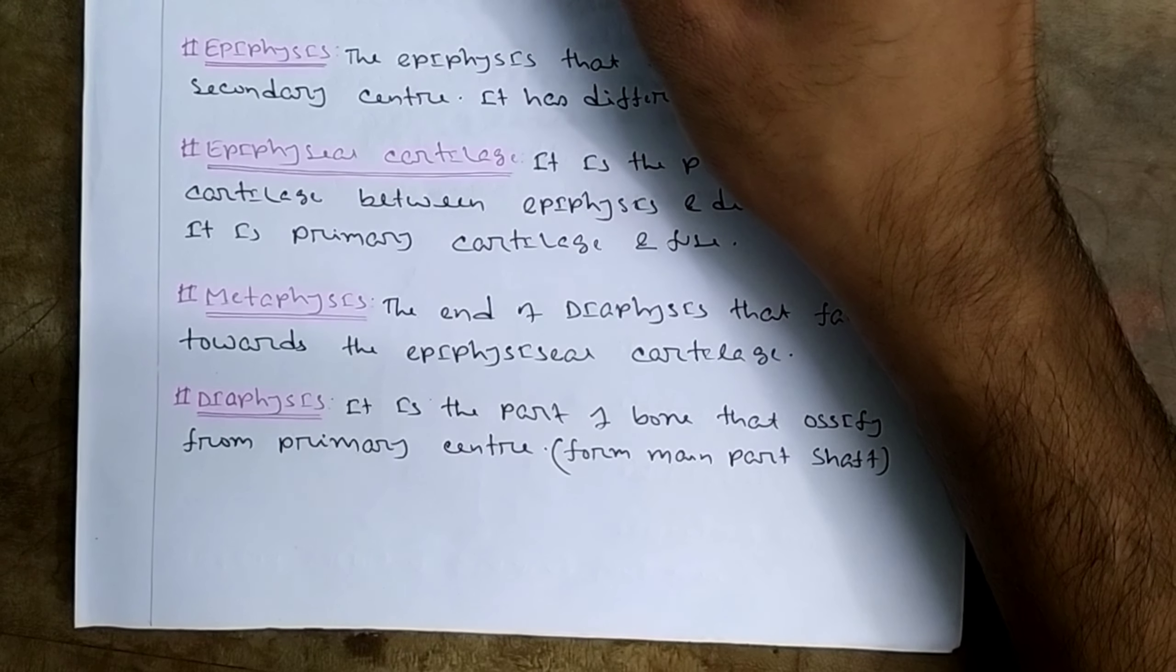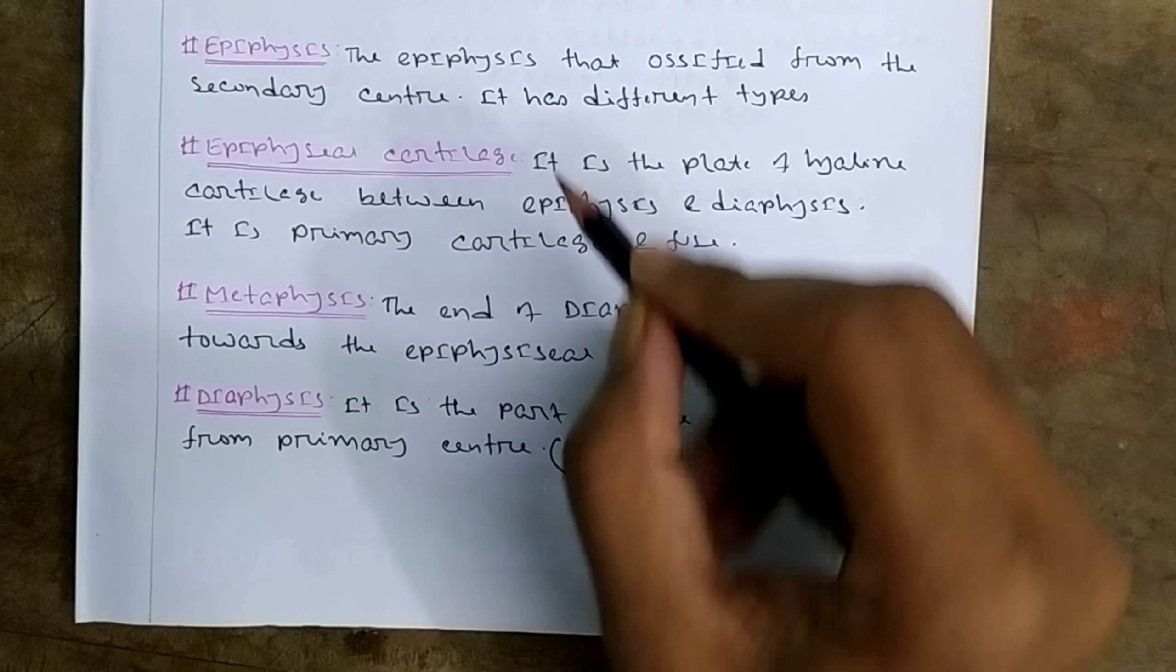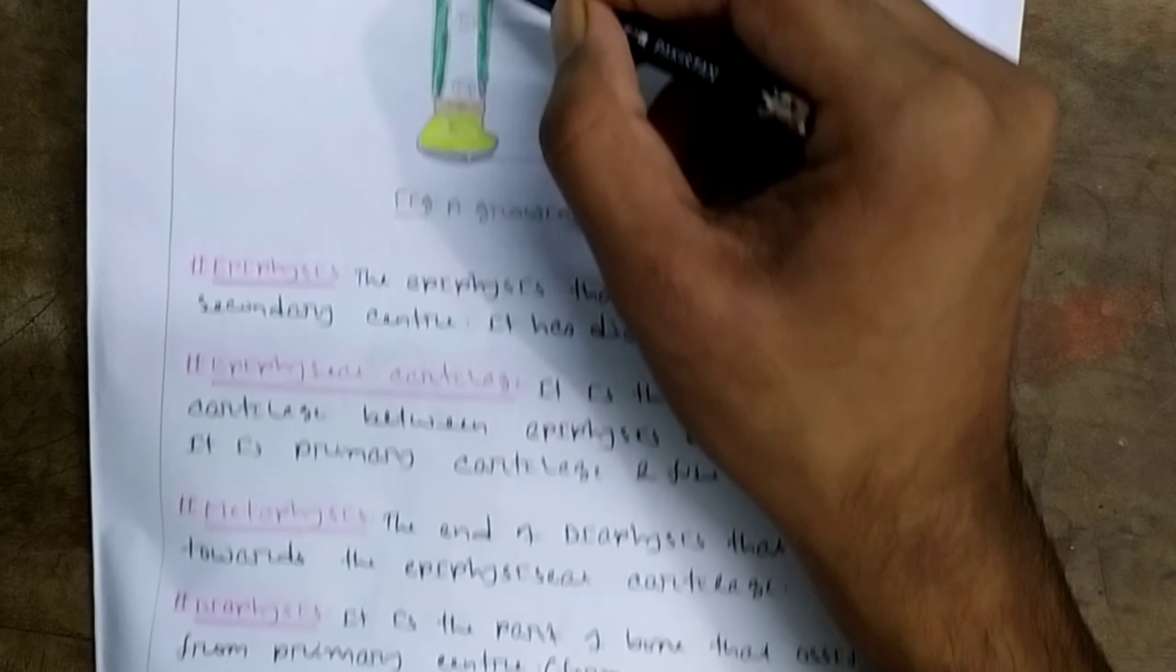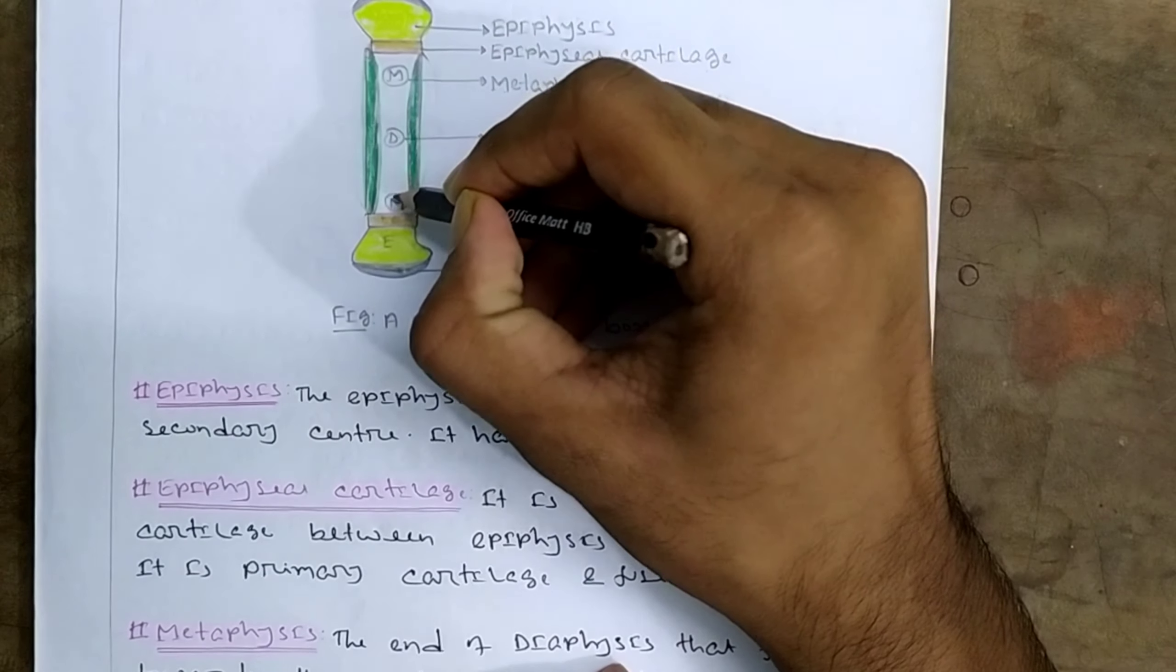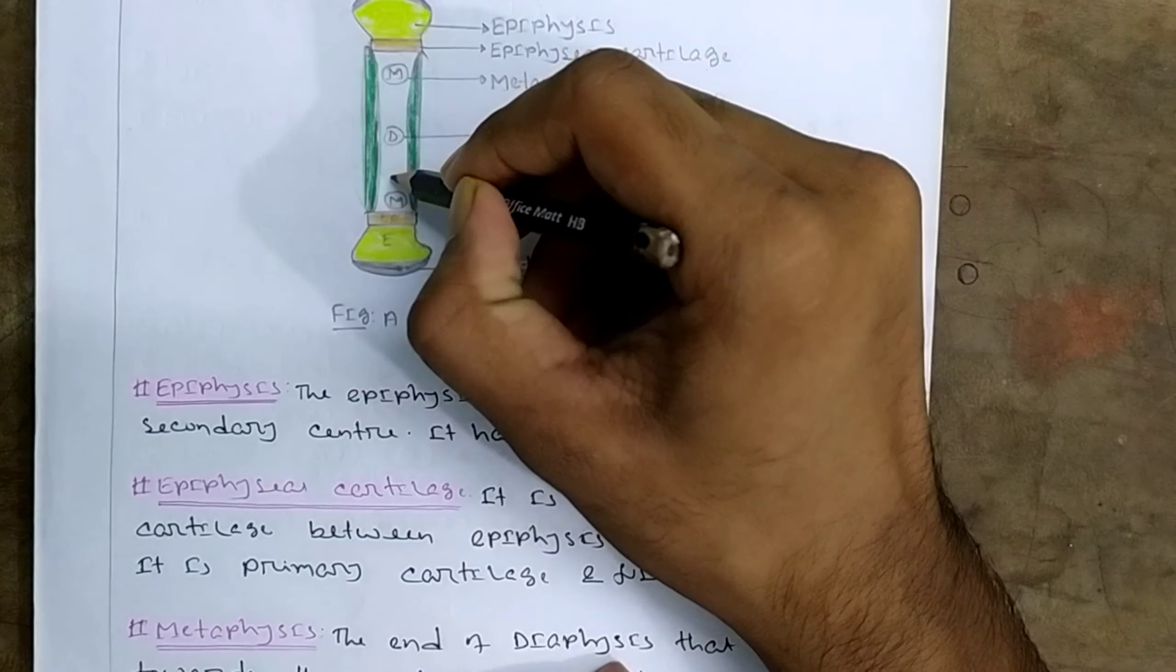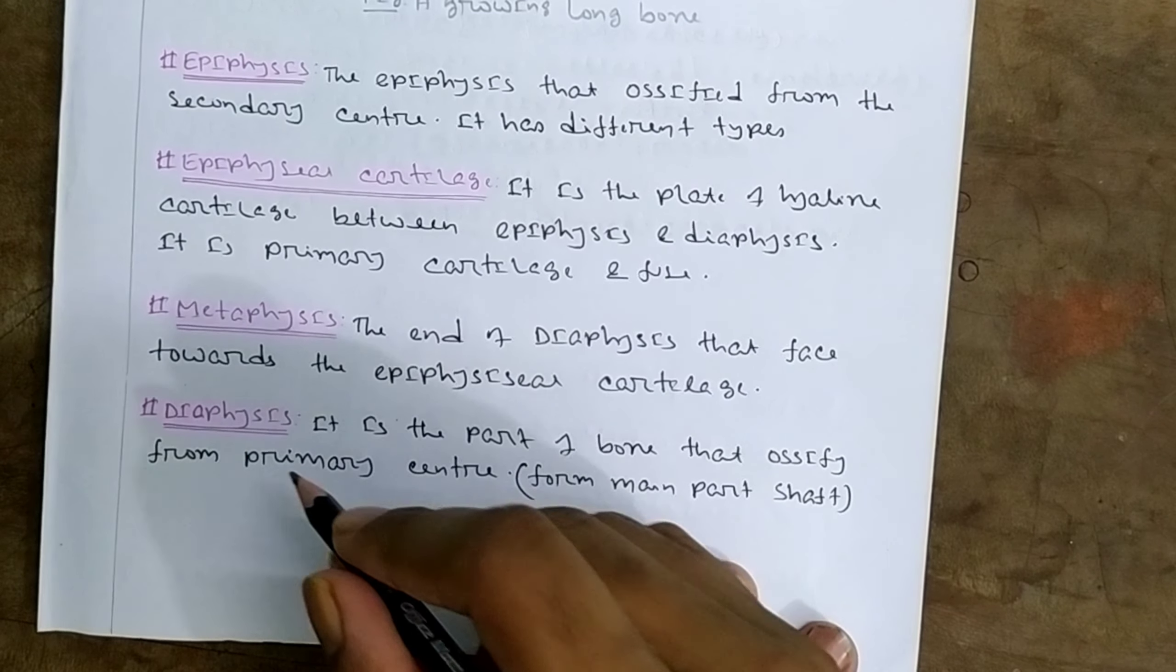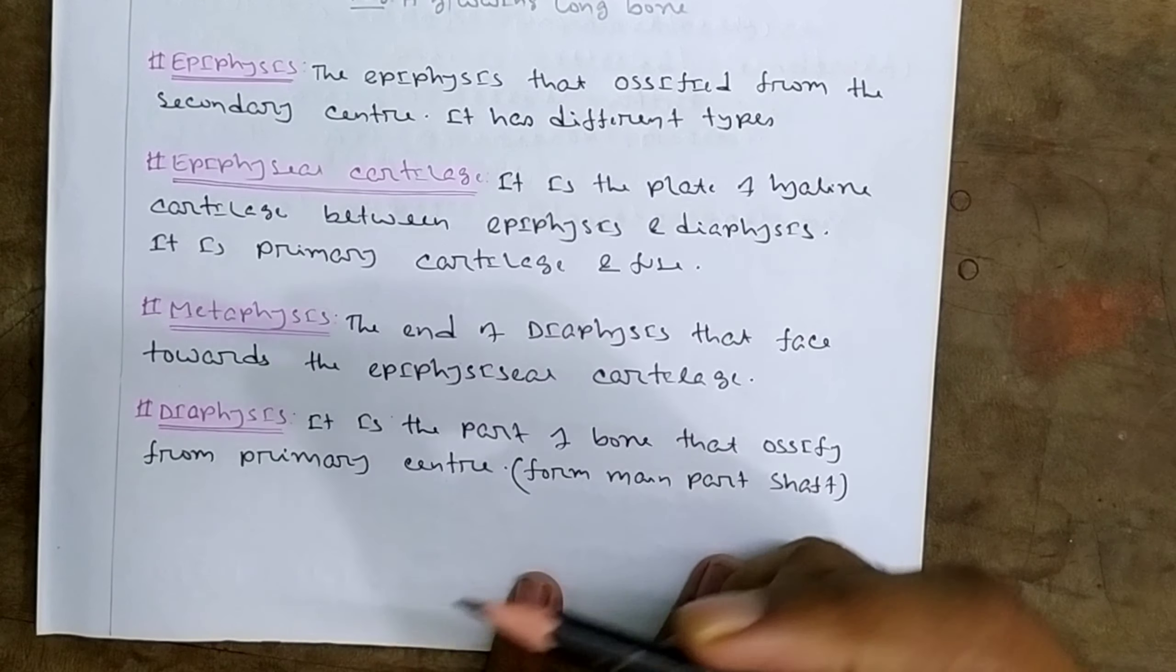The metaphysis is the end of diaphysis that faces toward the epiphyseal cartilage. Since the epiphyseal cartilage is between epiphysis and diaphysis, metaphysis is the end of diaphysis that faces the epiphyseal cartilage. It is the part of bone that ossifies from the primary center.